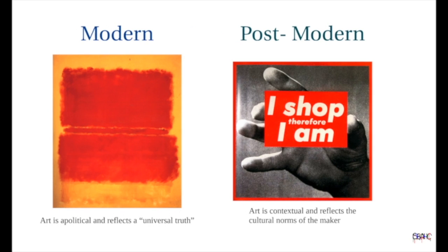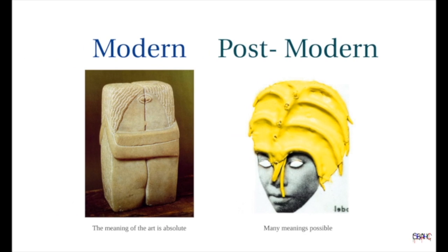Modern artists were exploring the possibility of expressing universal values and progressive ideas. Postmodern artists feel that all art is colored by the context of the artist and therefore can only reflect a limited point of view, and that universal truth is an illusion. So if modern art was about universal values, then the meaning of art must be absolute.